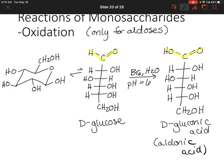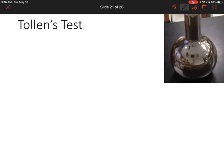Remember, we can't really do this for ketoses — monosaccharides that have a ketone at the top. If you don't know whether you have an aldose or a ketose, there is a test you can perform to figure out if you have an aldehyde or a ketone at the top. That's called the Tollens test. The Tollens test uses silver ions in aqueous ammonia.